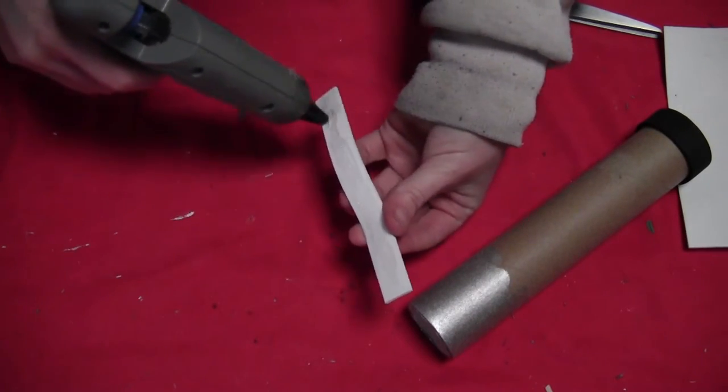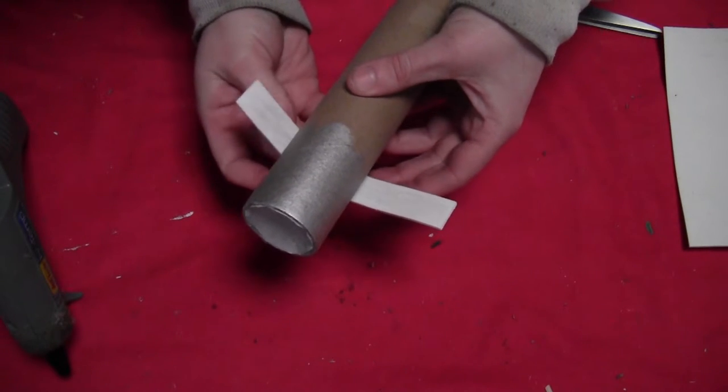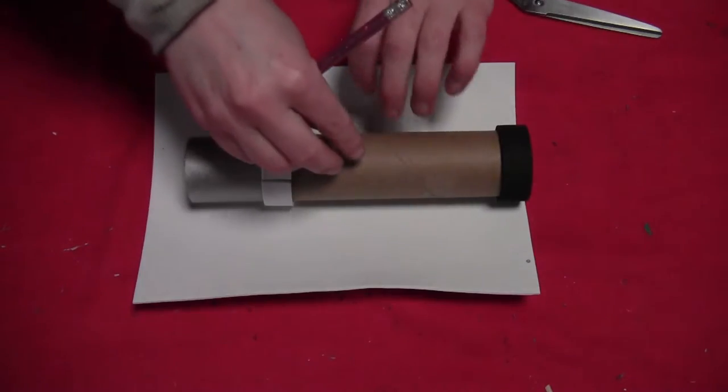Put a little glue on your strip and wrap that around the non-silver end of your tube. And then take the other one, put a little bit of glue on that, and wrap that a little bit back from the end of the silver. So you want it touching the silver.